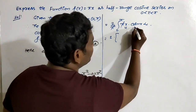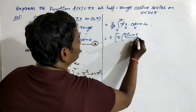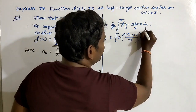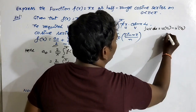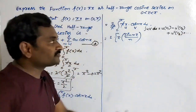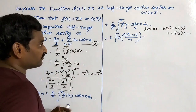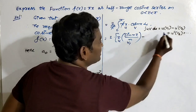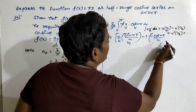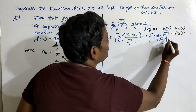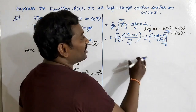We apply the UV rule, where the algebraic term is the first function and the trigonometric term is the second. So x is u and cos(nx) is v. The UV rule is: u·v₁ − u′·v₂ + u″·v₃ − ... continuing until the derivative of the first term reaches zero. Here: x·(sin(nx)/n) − 1·(−cos(nx)/n²), evaluated within limits. Since the derivative of 1 is 0, the formula is complete at this step.